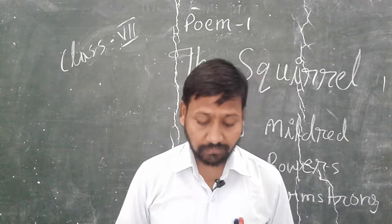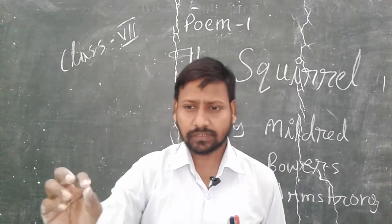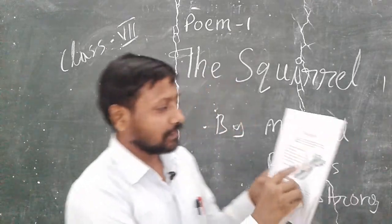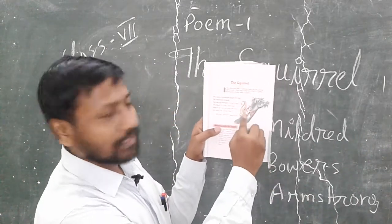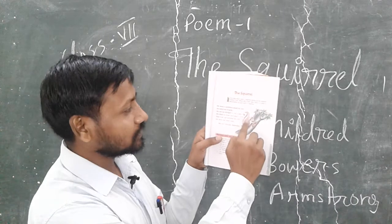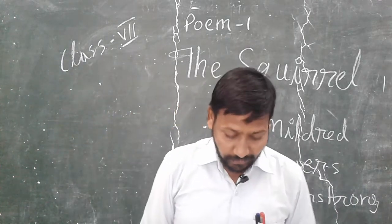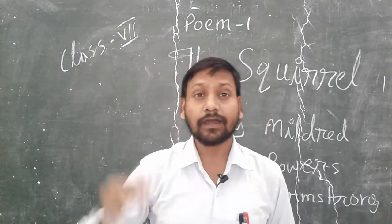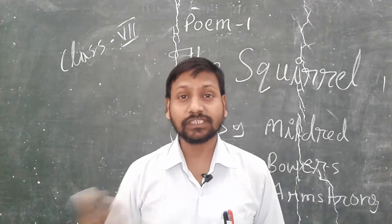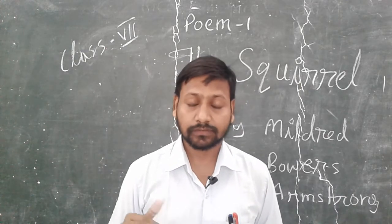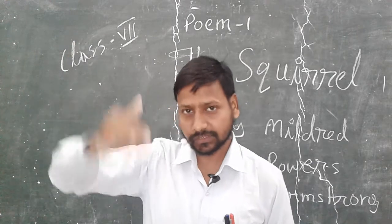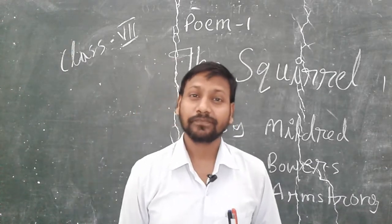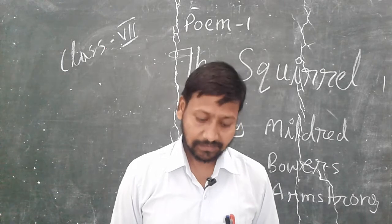The first line: 'He wore a question mark for tail' — his tail is looking like a question mark, as you have seen. 'And overcoat of grey' — overcoat means the upper body's colour is grey. That is what the poet is saying — his overcoat is grey.